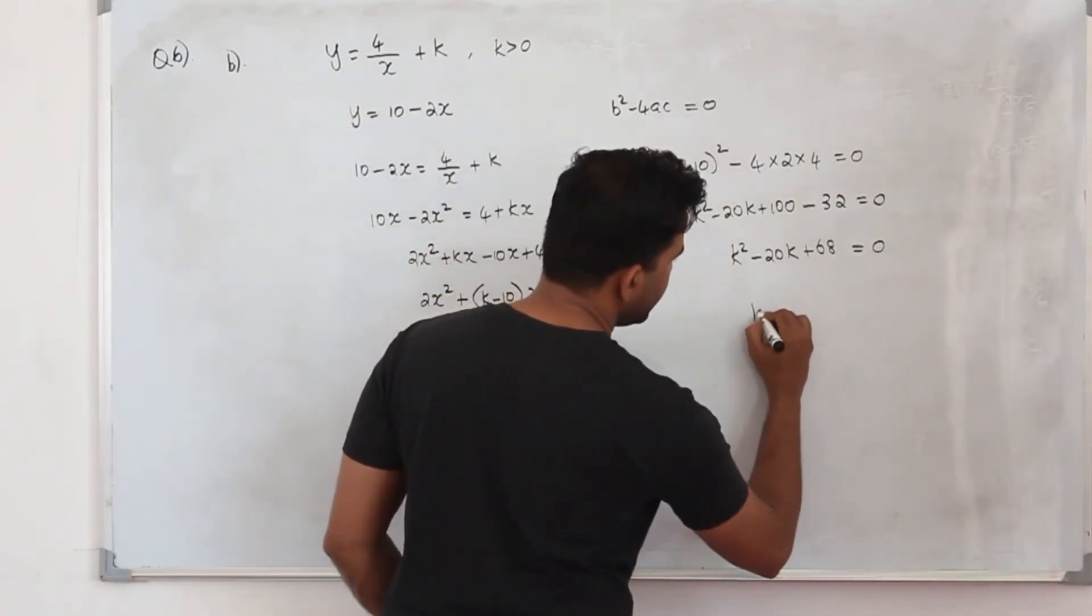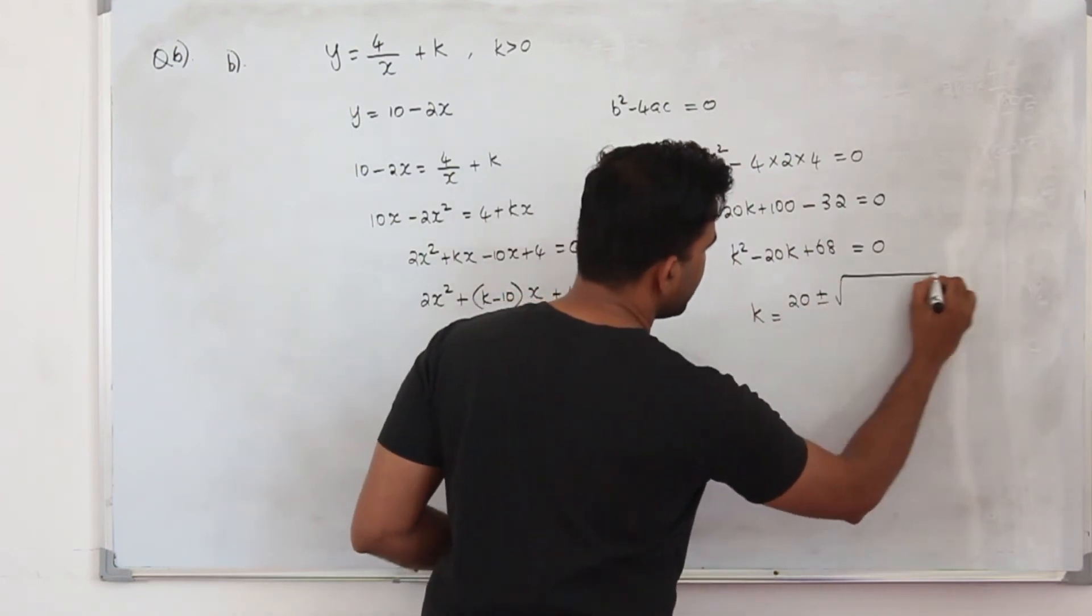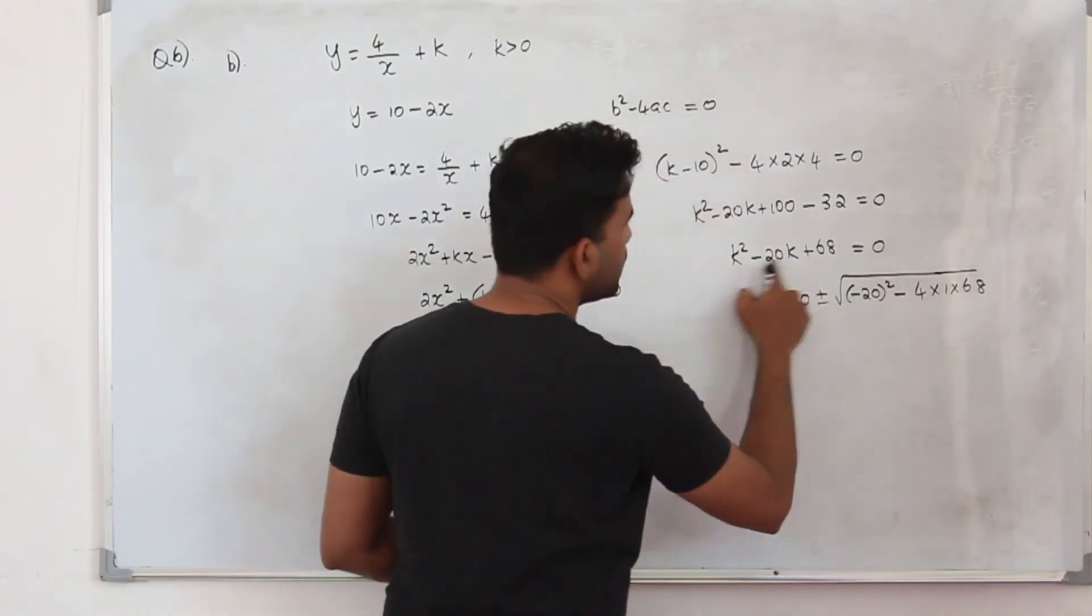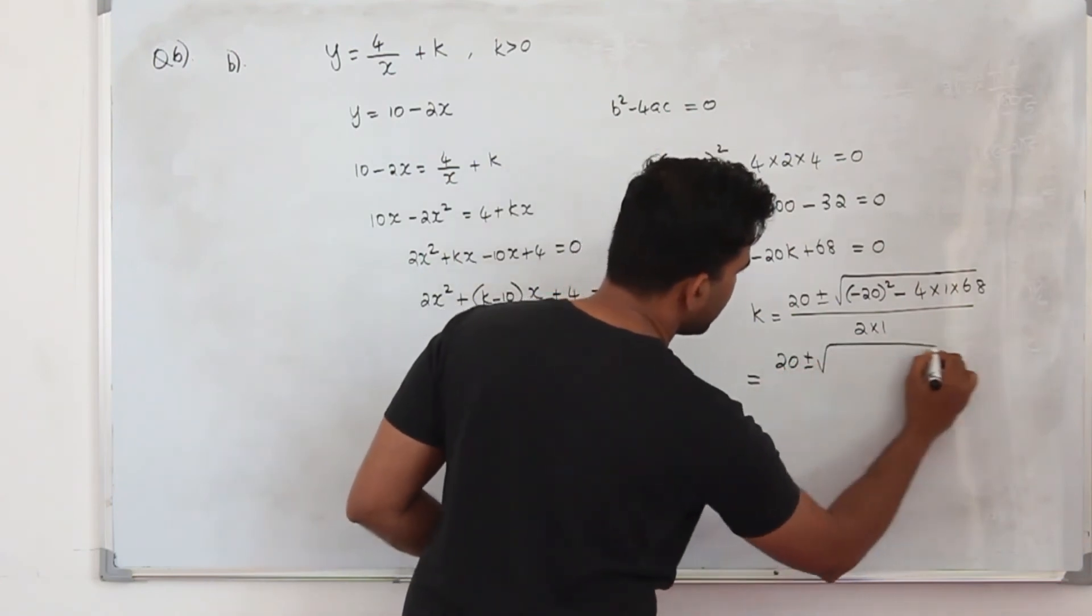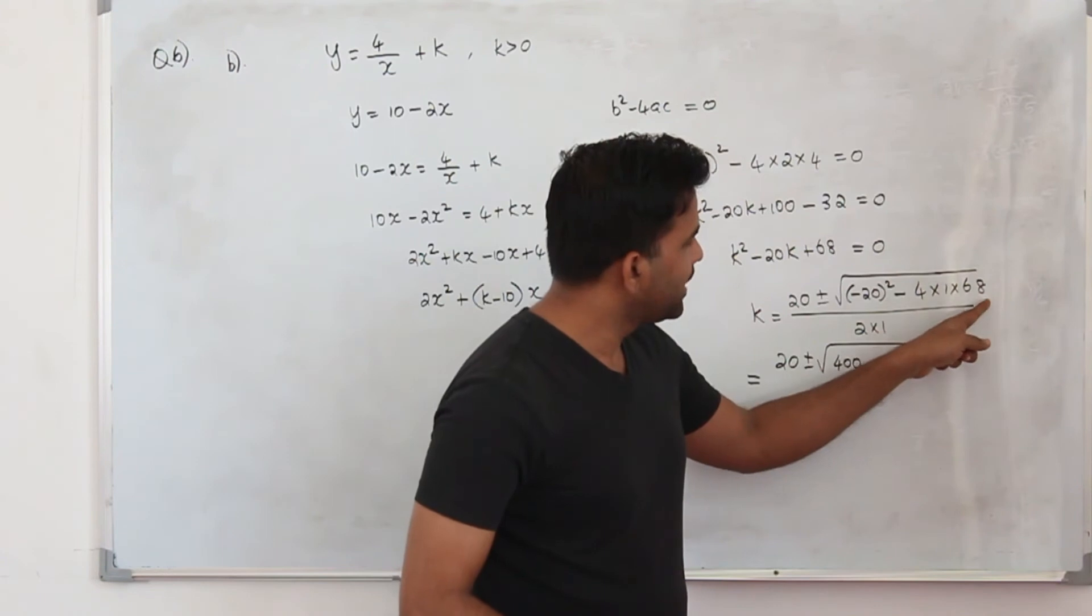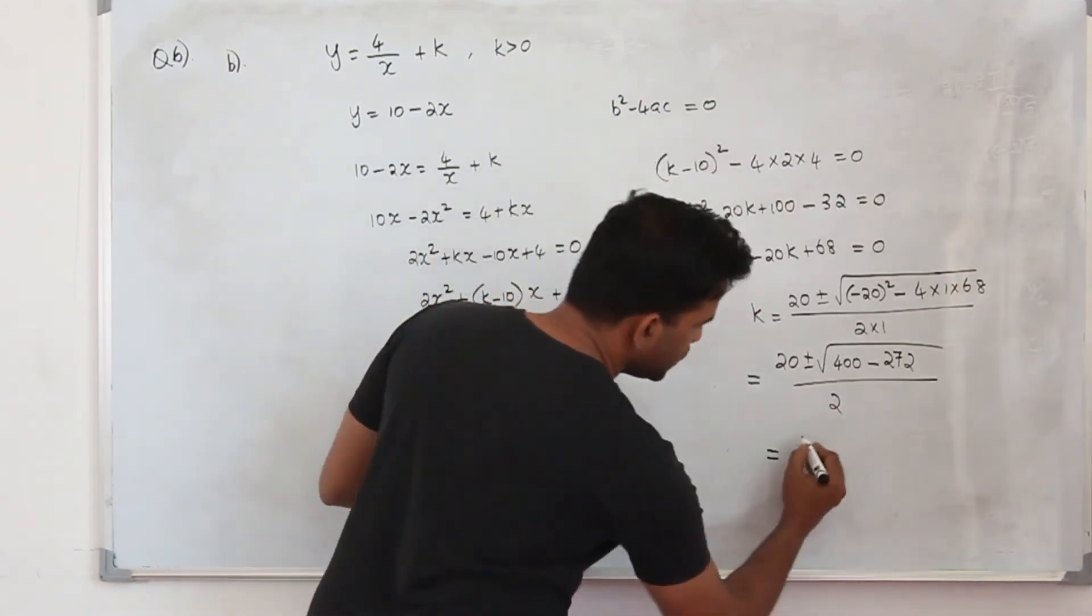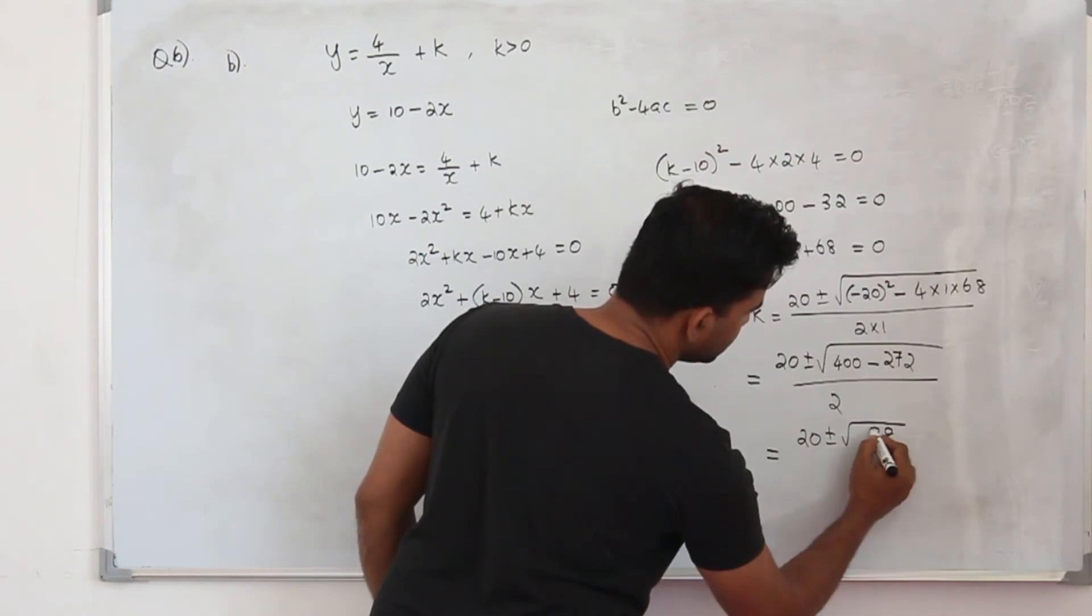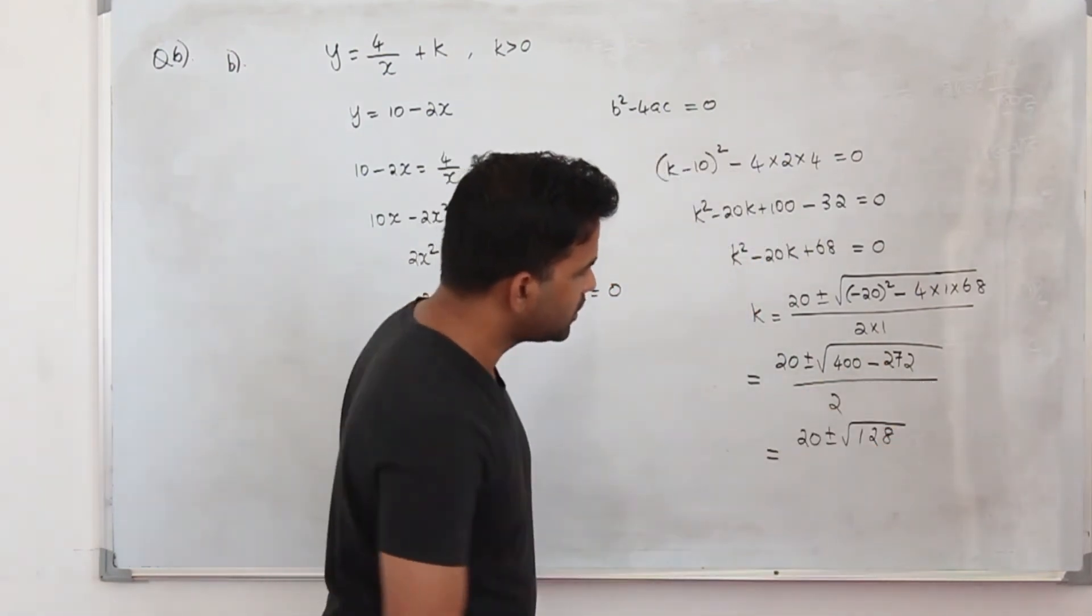We are going to solve this. Your k is, I am going to use the formula method. Minus b, so it will become positive 20. Plus or minus square root of b square minus 4ac. A is 1. C is 68. Divided by 2a. So it will be 20 plus or minus square root of 20 square is 400 minus 4 times 68, 272, divided by 2. And we simplify further. 20 plus or minus square root of 128 divided by 2.